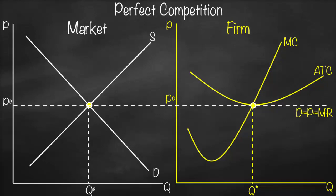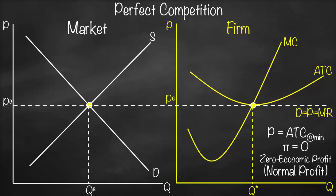At Q*, we have price equal to average total cost, and average total cost is at its minimum. Consequently, our profit is equal to zero — we have zero economic profit, or normal profit. In this example, price equals average total cost, giving us zero economic profit.